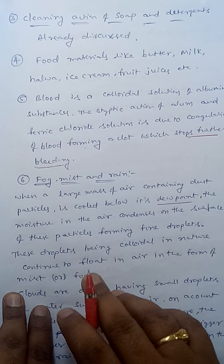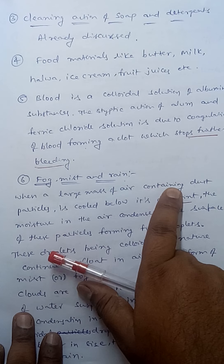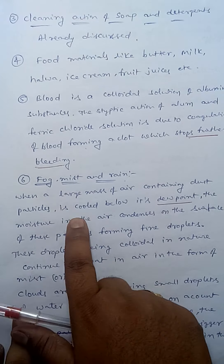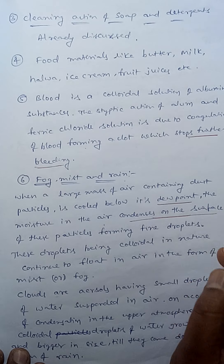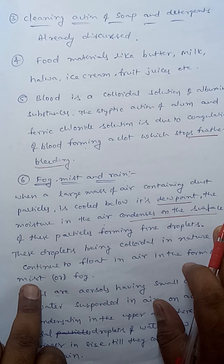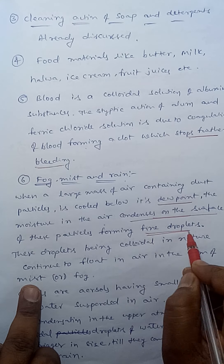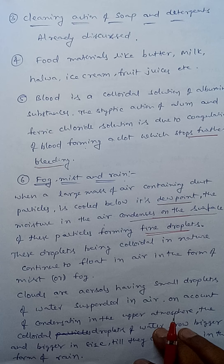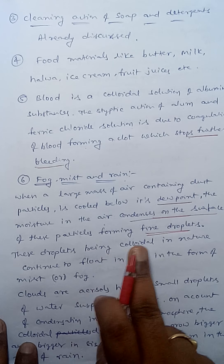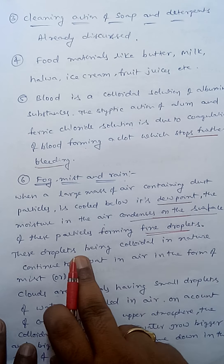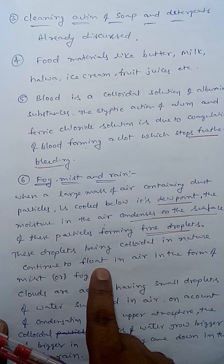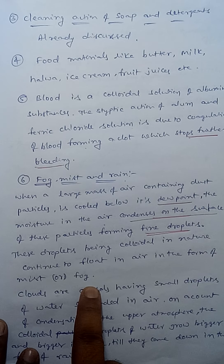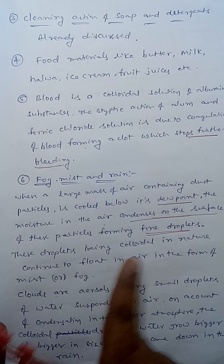When the air is cooled below its dew point, the moisture in the air condenses on the surface of dust particles, forming fine droplets. These droplets, being colloidal in nature, continue to float in air in the form of mist or fog.